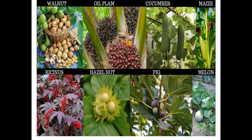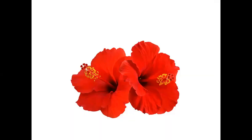This is the image of China rose, which is a bisexual flower. As you can see, the red spots indicate the pistil — the female part — and the yellow parts below are the anther, which is the male part. The scientific name of China rose is Hibiscus, and it is a bisexual flower.